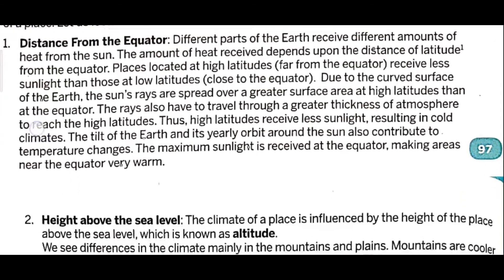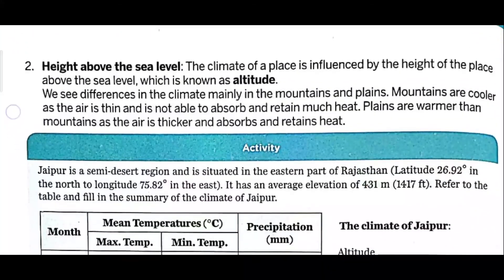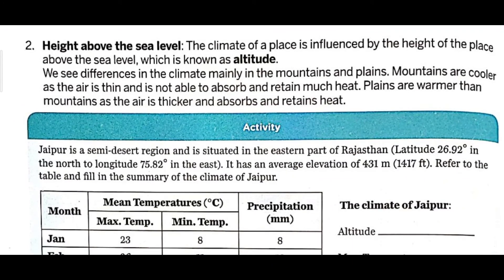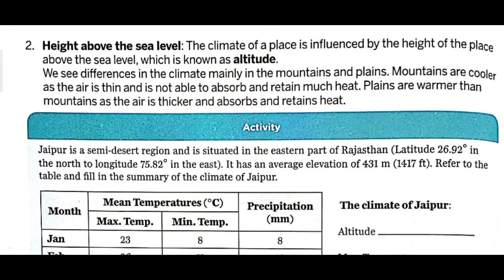Another factor is height above sea level. The climate of a place is influenced by its height above sea level, which is known as altitude. We see differences in climate mainly between mountains and plains — mountains are cooler as the air is thin.